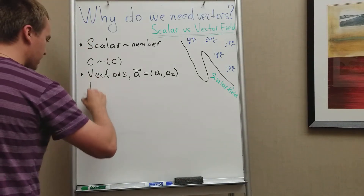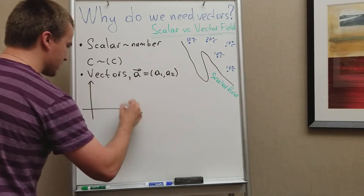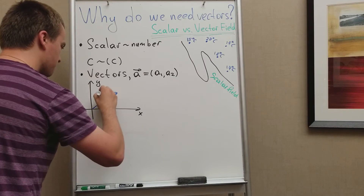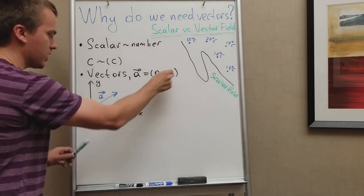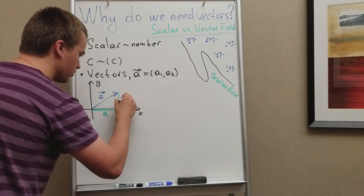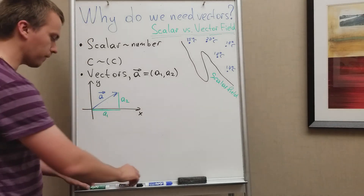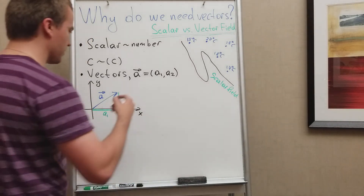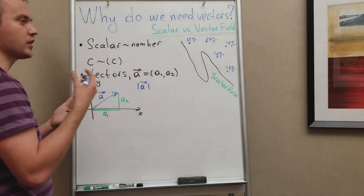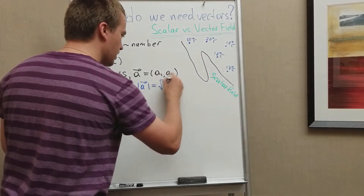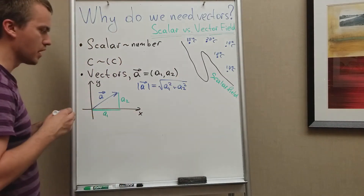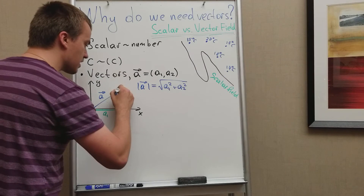Why? Because, for example, we have a two-dimensional coordinate system XY, and let's say this is our vector A. What do the components mean? A1 is the projection onto the X axis, and A2 is the projection onto the Y axis. So what two quantities do we have? First, we have the length of our vector, which is the square root of A1 squared plus A2 squared. But another piece of information vectors give us is direction.